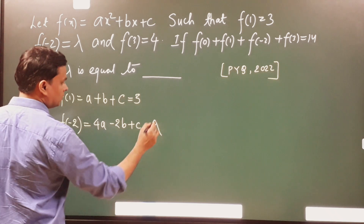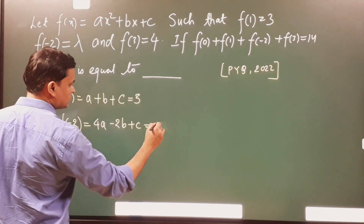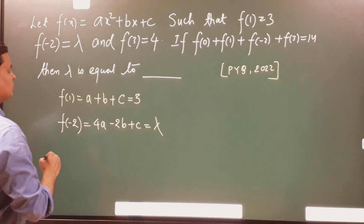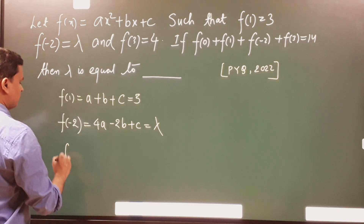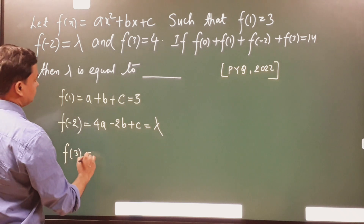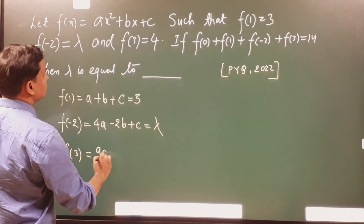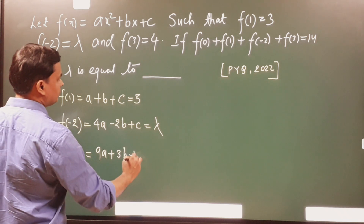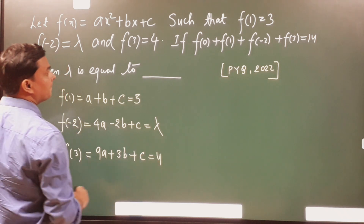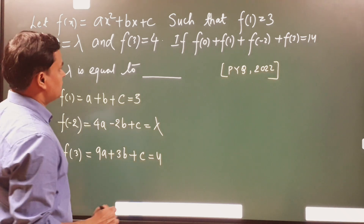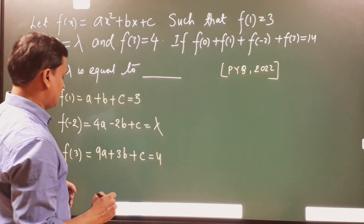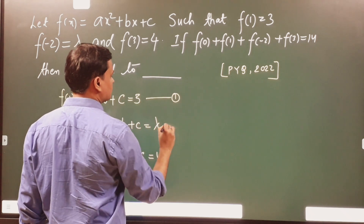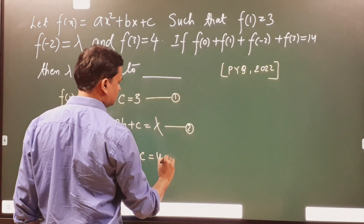4a - 2b + c = lambda is the second equation. The third equation will be f(3) = 4, so f(3) = 9a + 3b + c = 4. These are the conditions given to us. This is equation number 1, this is equation number 2, and this is equation number 3.